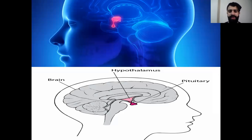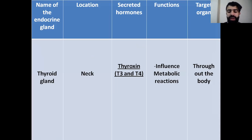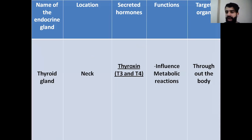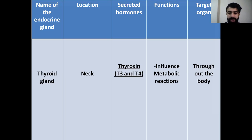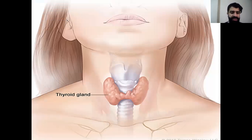The pituitary gland is located at the base of the brain below the hypothalamus. Moving to the second gland: the thyroid gland, located at the level of the neck. The thyroid gland secretes the hormone thyroxine, in forms T3 and T4. Thyroxine influences metabolic reactions — the metabolism inside our body — and it works throughout the whole body, so it doesn't have a specific target organ.